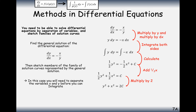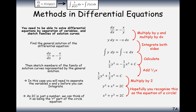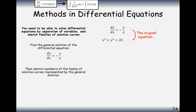This equation looks very familiar — it looks like the equation of a circle, because x squared plus y squared equals r squared. So if we just set 2c equal to r squared, that gives us the equation of a circle. We just square root 2c to work out what r is.